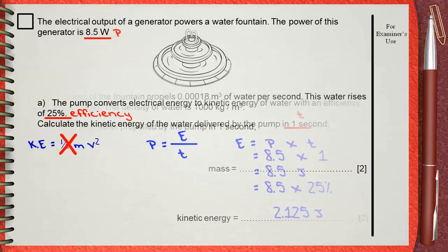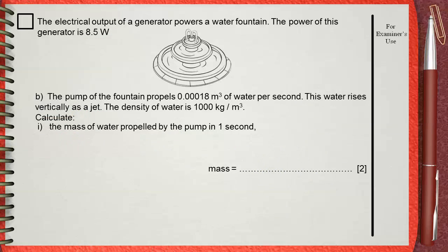Question B. The pump of the fountain propels 0.00018 meters cubed of water per second. This water rises vertically as a jet. The density of water is 1000 kilograms per meter cubed. Calculate number 1: the mass of water propelled by the pump in 1 second.